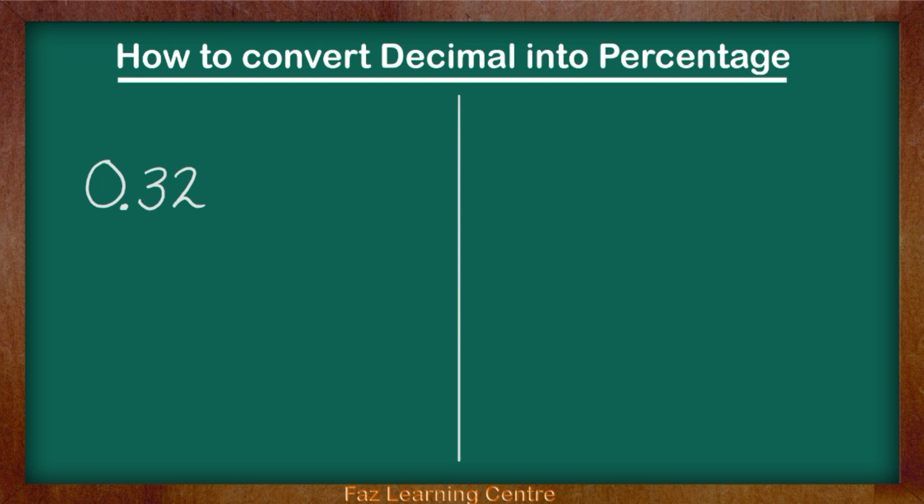In order to convert decimals into percentages we need to times them by 100. So 0.32 times by 100.